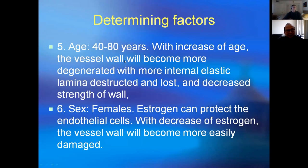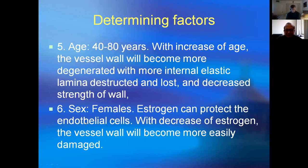Age is also a factor — aneurysms usually occur between 40 and 80 years. With increasing age, the vessel wall becomes more degenerated with internal elastic lamina distracted and lost, decreasing wall strength. For females, estrogen can protect the endothelial cells; with decrease of estrogen, the vessel wall becomes more easily damaged.